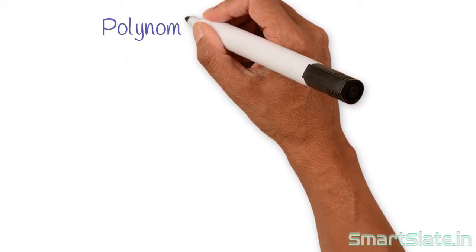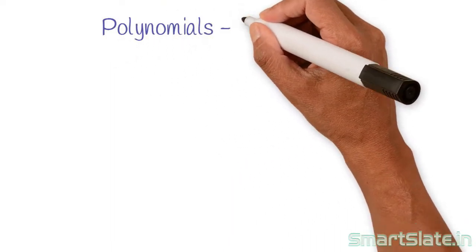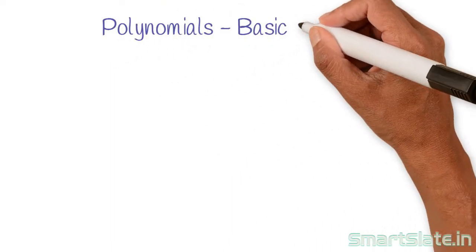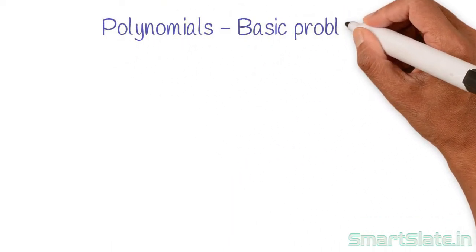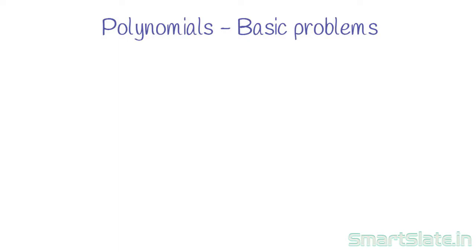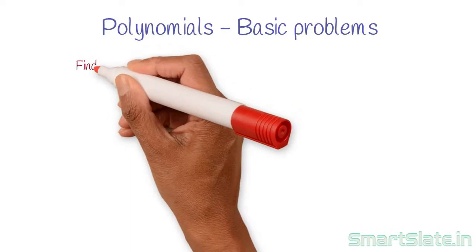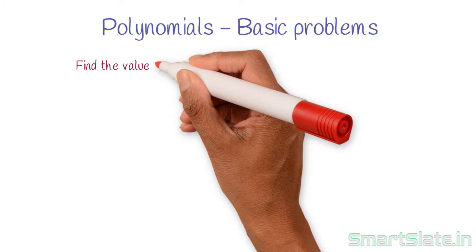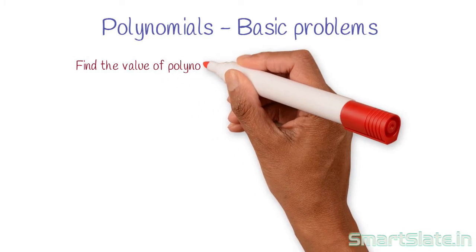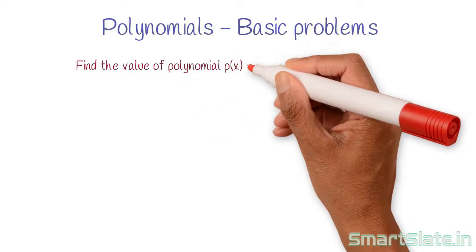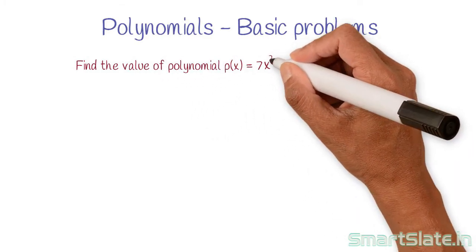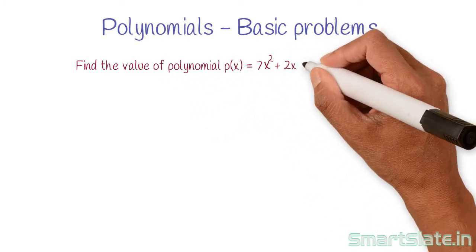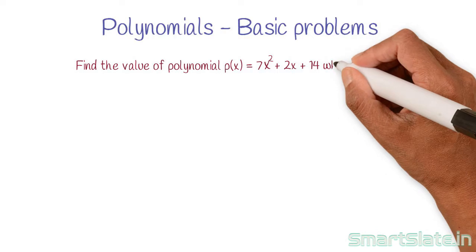I will start a practice session with some very simple examples. Let's begin with finding the value of a polynomial. Find the value of polynomial 7x squared plus 2x plus 14 when x is equal to 1.